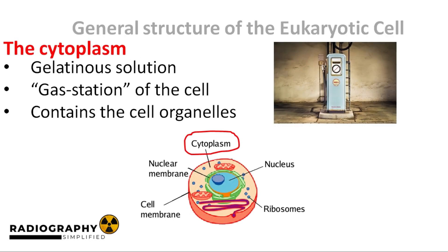First, we have the cytoplasm. The cytoplasm is a gelatinous solution found between the plasma membrane and the nucleus of the cell. This solution contains inorganic ions which serve as the building blocks of many metabolic processes within the cell. The cytoplasm has been colloquially referred to as the gas station of the cell — if another organelle runs out of a particular ion, the cytoplasm provides a refill. In addition to supplying ions, the cytoplasm also serves as the medium within which the other organelles float.